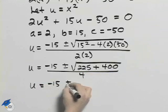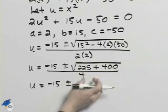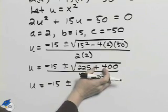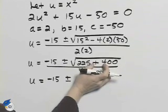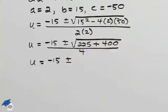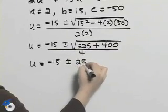Continuing to simplify, we have negative 15 plus or minus the square root of 625. And it just so happens that 625 is a perfect square. It happens to be 25.